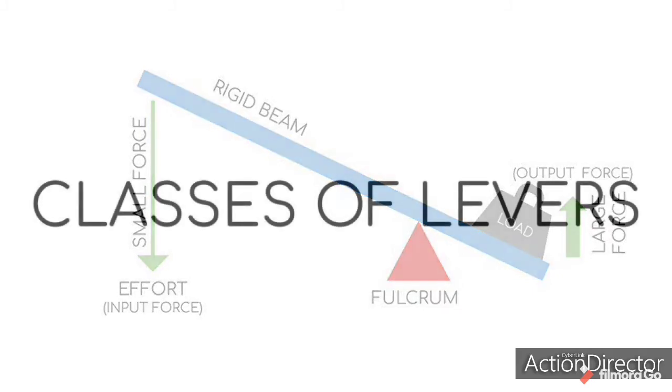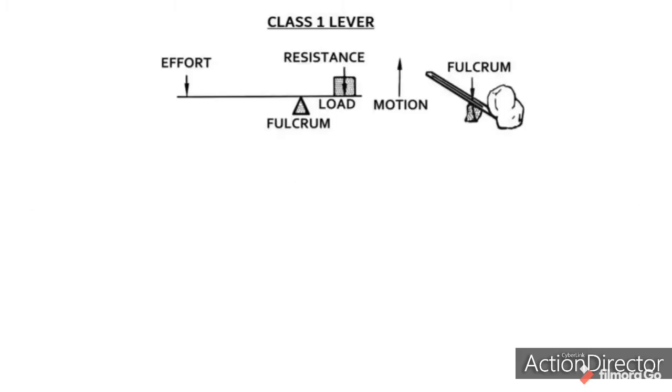There are three classes of levers. Each is classified by the relative positions of the fulcrum, effort, and resistance, or load. A class 1 lever has the fulcrum placed between the effort and load. The effort is pushed downwards.